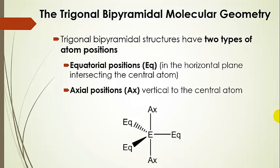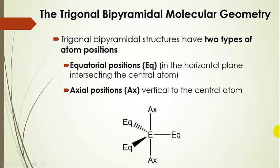Trigonal bipyramid structures have two types of atom positions. One is equatorial — a triangular plane that goes through the central atom. This plane would be coming in and out of the screen at you, sticking in and out of your computer screen. The axial positions, labeled AX, are perpendicular to this equatorial plane. So it's a 3D geometry with an equatorial plane that has three atom positions, and axial positions that are perpendicular to that plane.